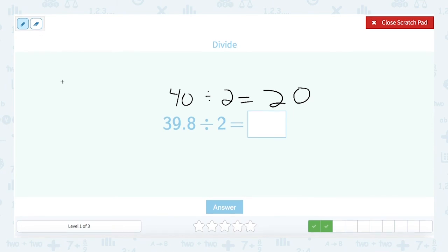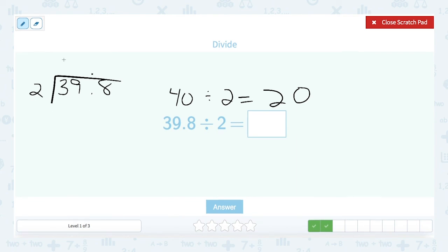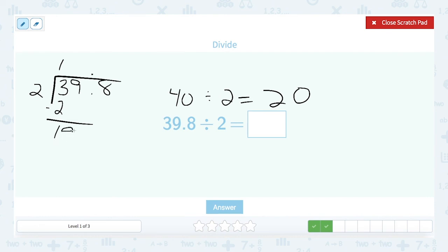Let's go ahead and set up our problem. 39.8 divided by 2. All right, remember the very first thing we do is we bring that decimal up. Now we can divide. 2 goes into 3 one time. 1 times 2 is 2. That gives me 1 when I subtract. I bring down the 9. 2 goes into 19 nine times.